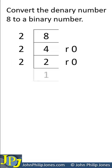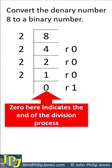2 into 2 goes once with the remainder of 0, and 2 into 1 doesn't go so we write 0 down and that 1 then remains. 0 here indicates the end of the division process.